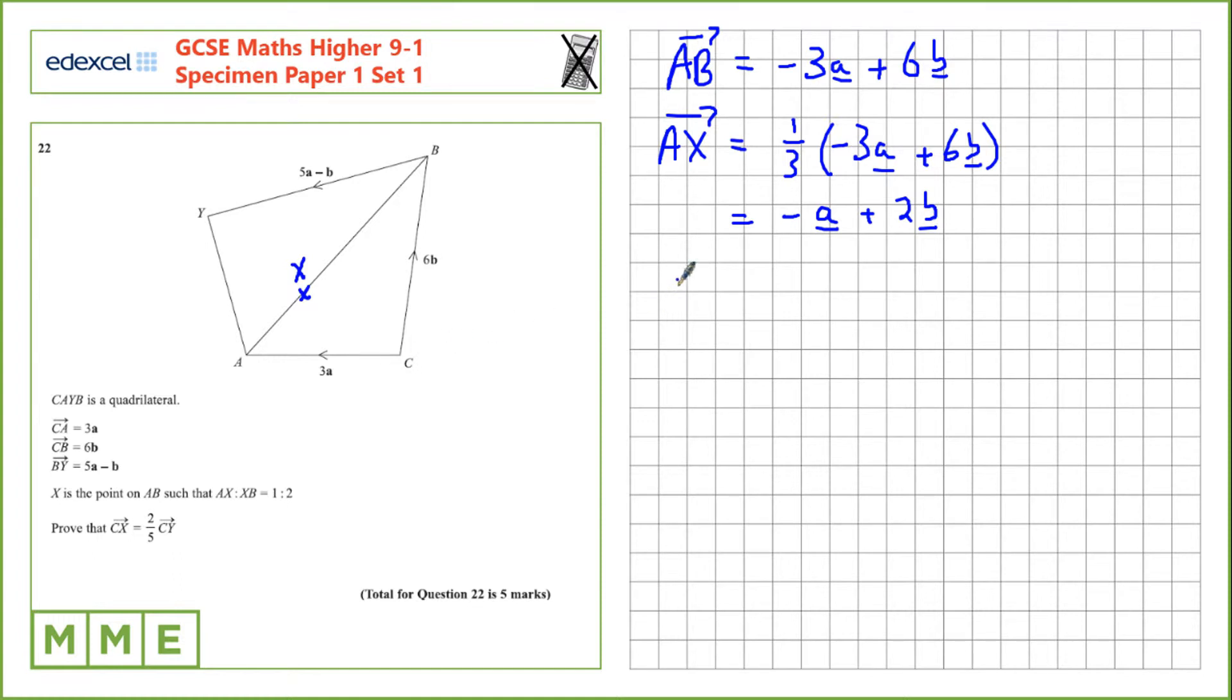The next thing we can work out is CX, which we go from C to A first. That's 3a, and then from A to X, which is this vector here that we just calculated, minus a plus 2b. If we collect up the terms, we have 2a plus 2b.